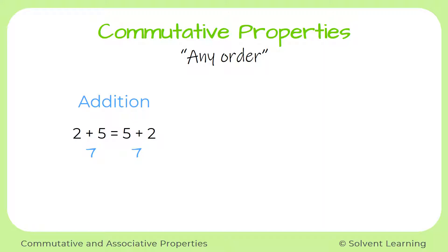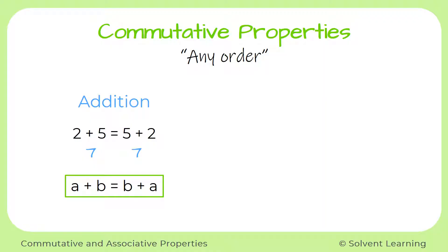And of course, this doesn't just work for the numbers 2 and 5 — it works for all real numbers. So in algebra, whenever we want to show that something works for all real numbers, we use variables. We can use the variables a and b to show this rule, so we can say that a plus b is equal to, or the same as, b plus a.